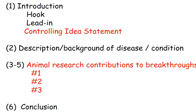What we really need to decide before we write anything is what our controlling idea is. Your controlling idea is the main idea you want the reader to know about. It's going to help us organize the paper and determine how we order our paragraphs about animal research contributions. It's the idea that all of our evidence in all of the paragraphs is going to support, so it's important to know what that is before we begin writing.